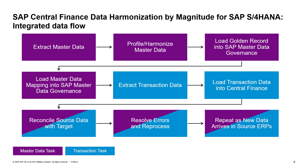If you have both the data harmonization and transaction replication solutions from Magnitude, you can link them together to process master data before processing transactions. This reduces AIF errors and streamlines ongoing replication processes.